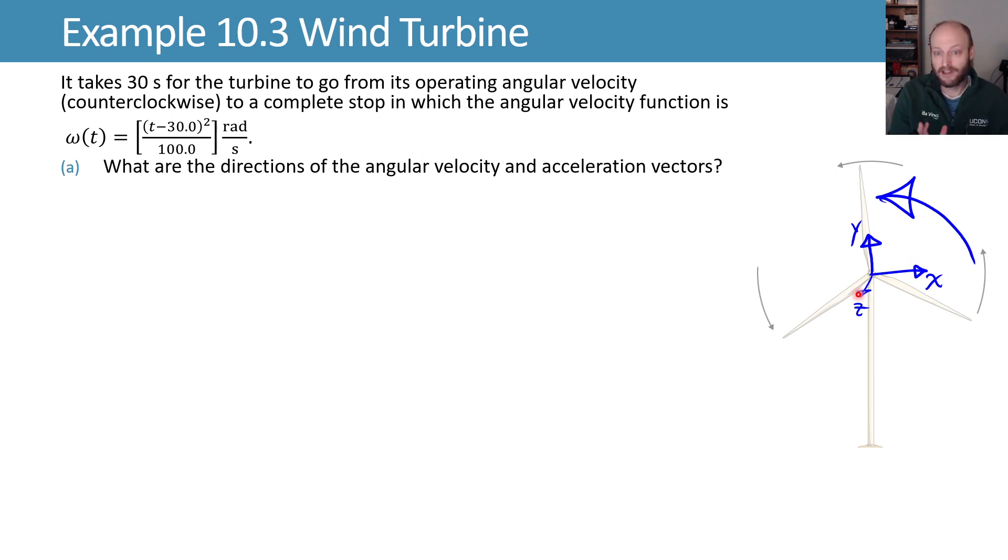We don't get a choice of z once we've specified x and y. We want to stick with right-handed coordinate systems, so when you go x cross y, your z should be coming towards you.